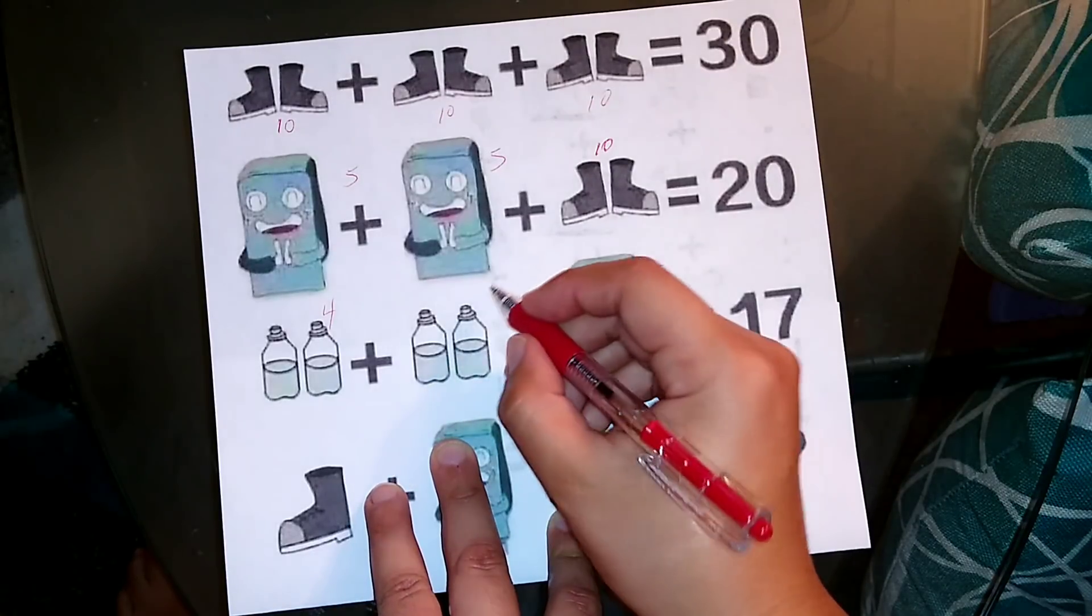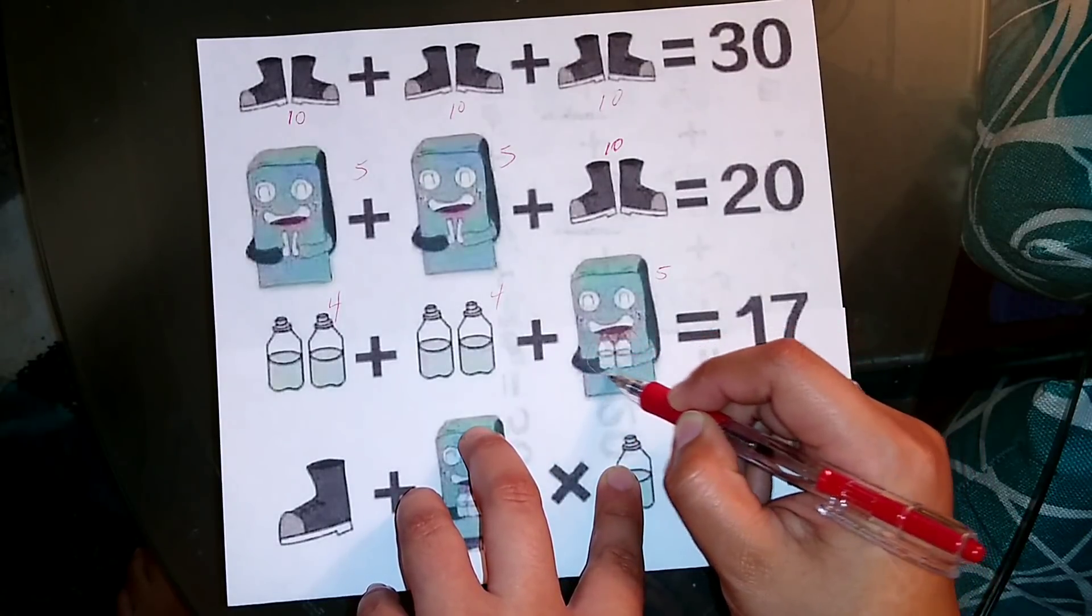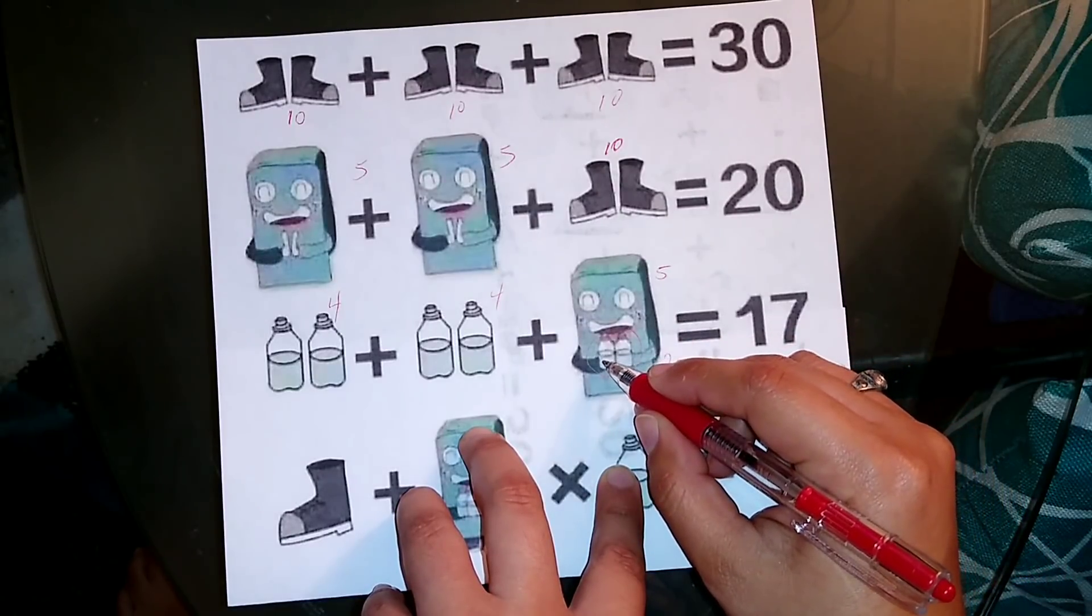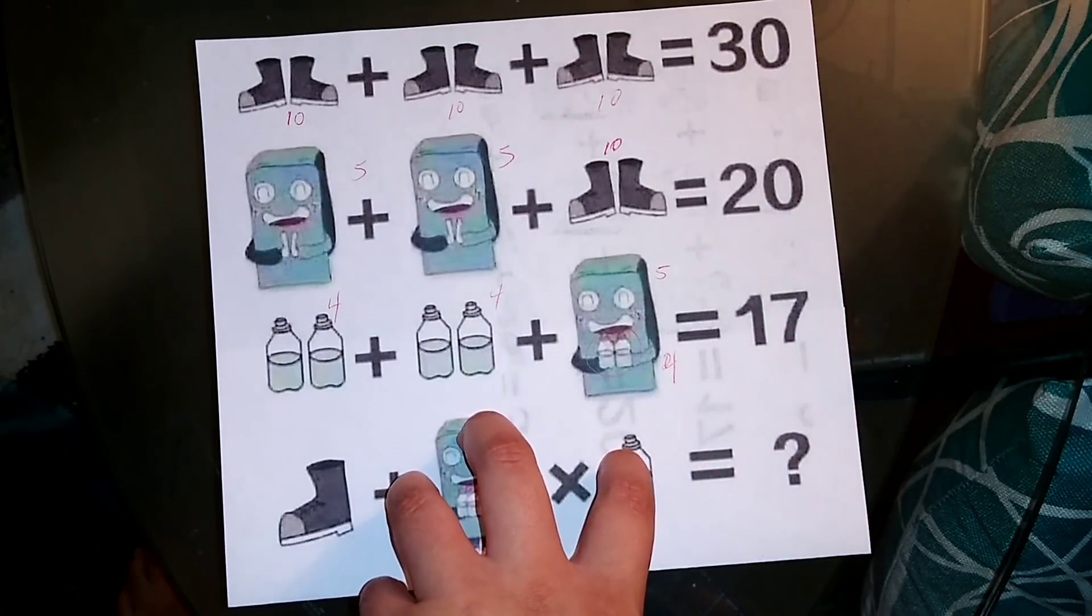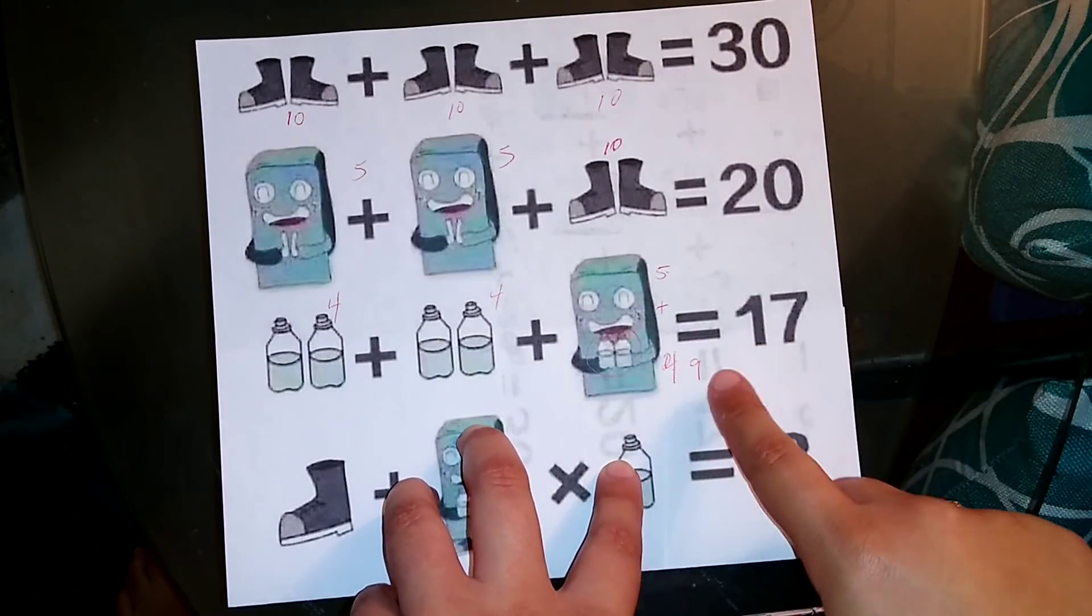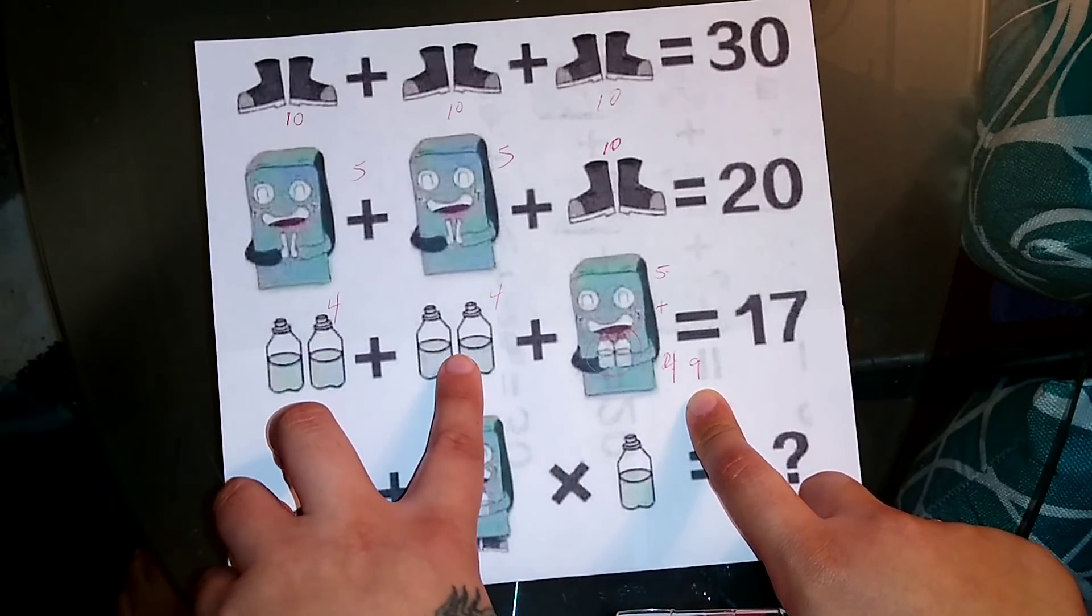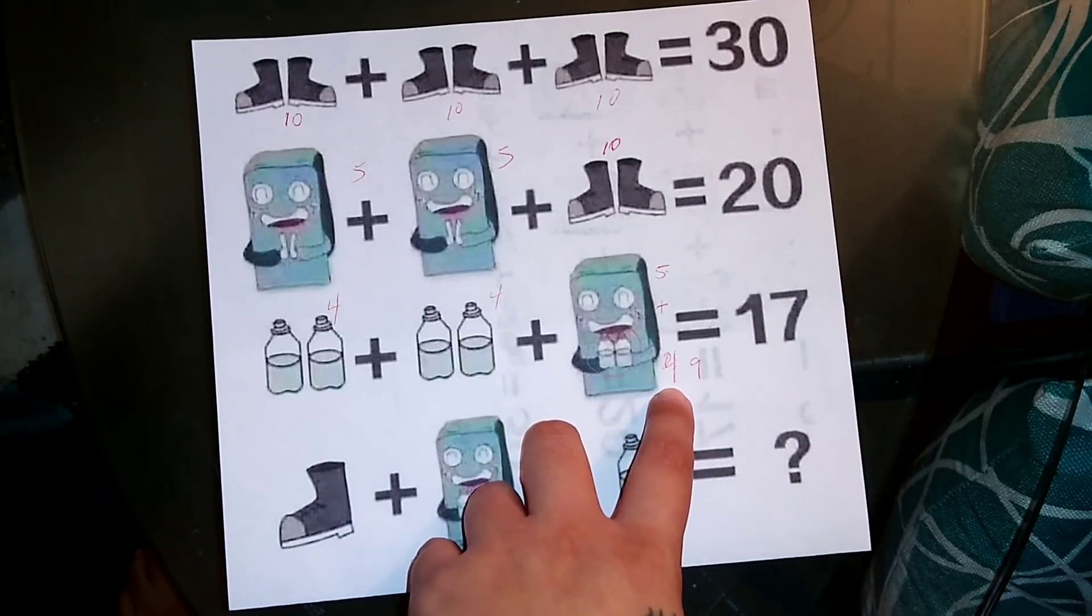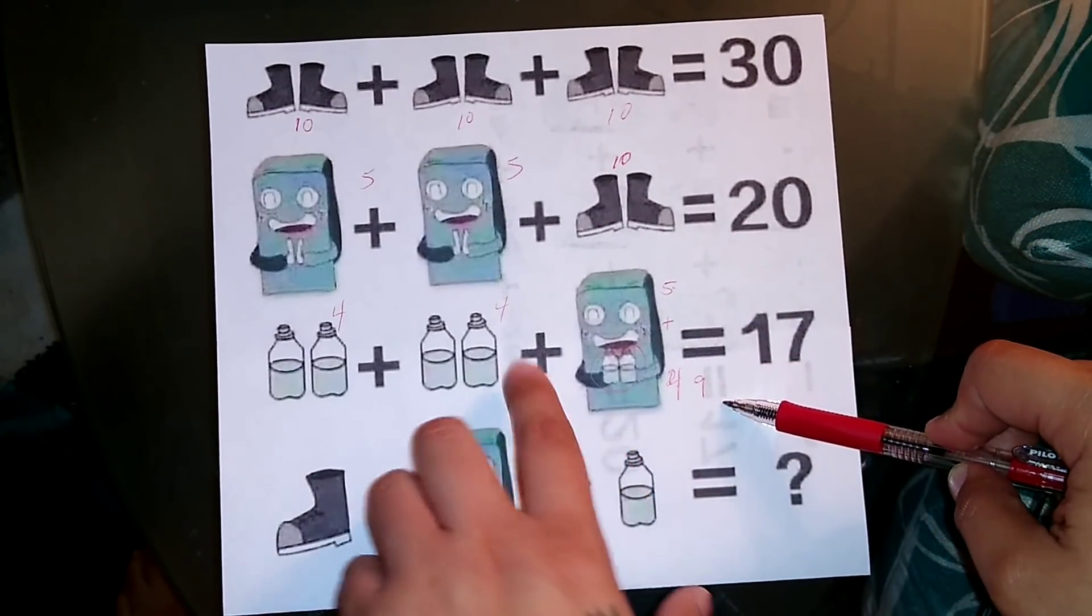2, and then he has 2 water bottles there, so that would give you 2 and 2, that would also give you 4. 5 plus 4 is 9. So 5 plus 4 is 9, plus 4 plus 4 will give you 17.